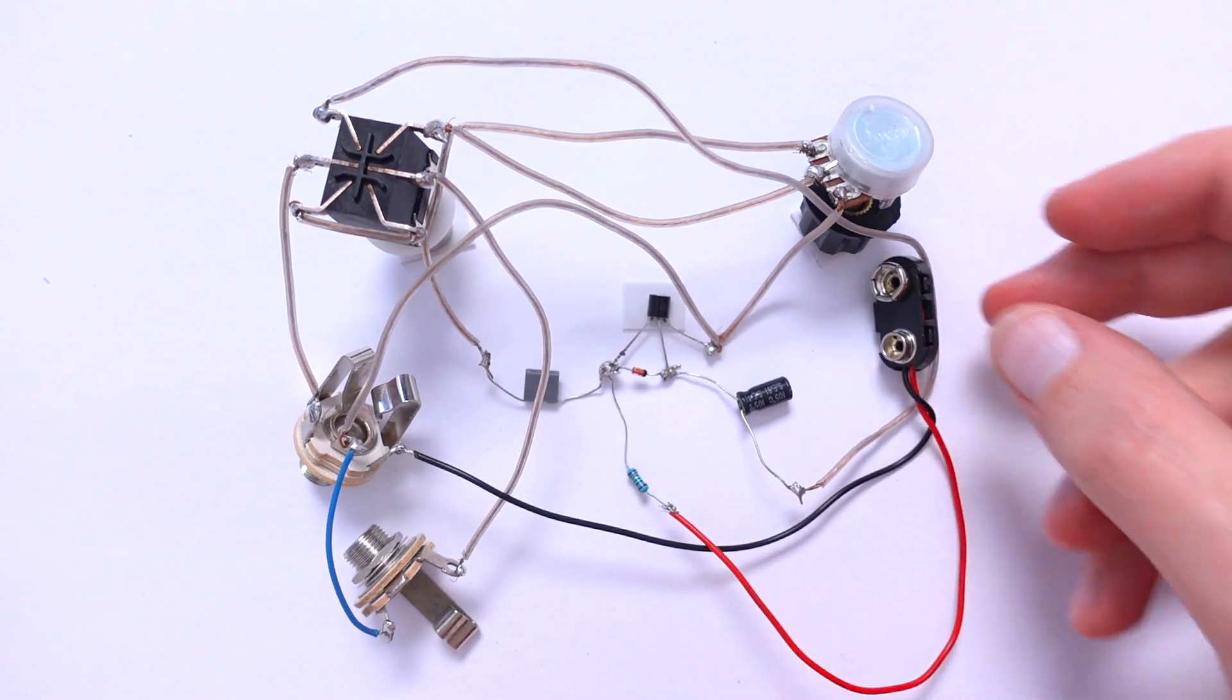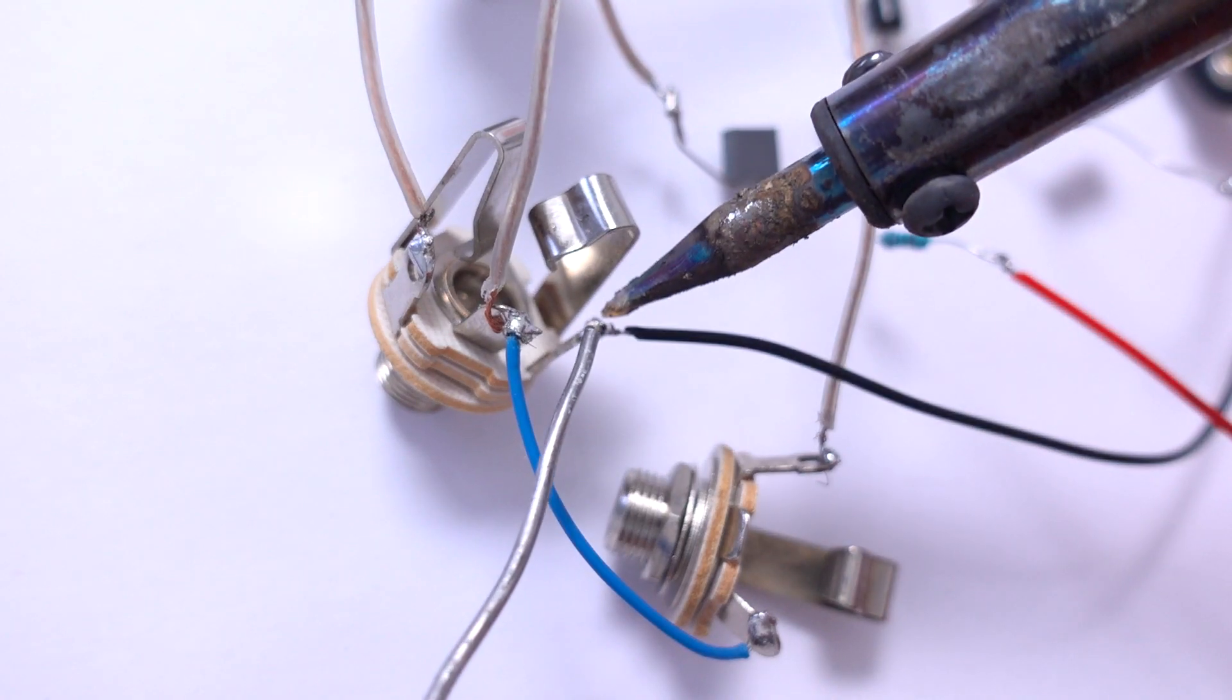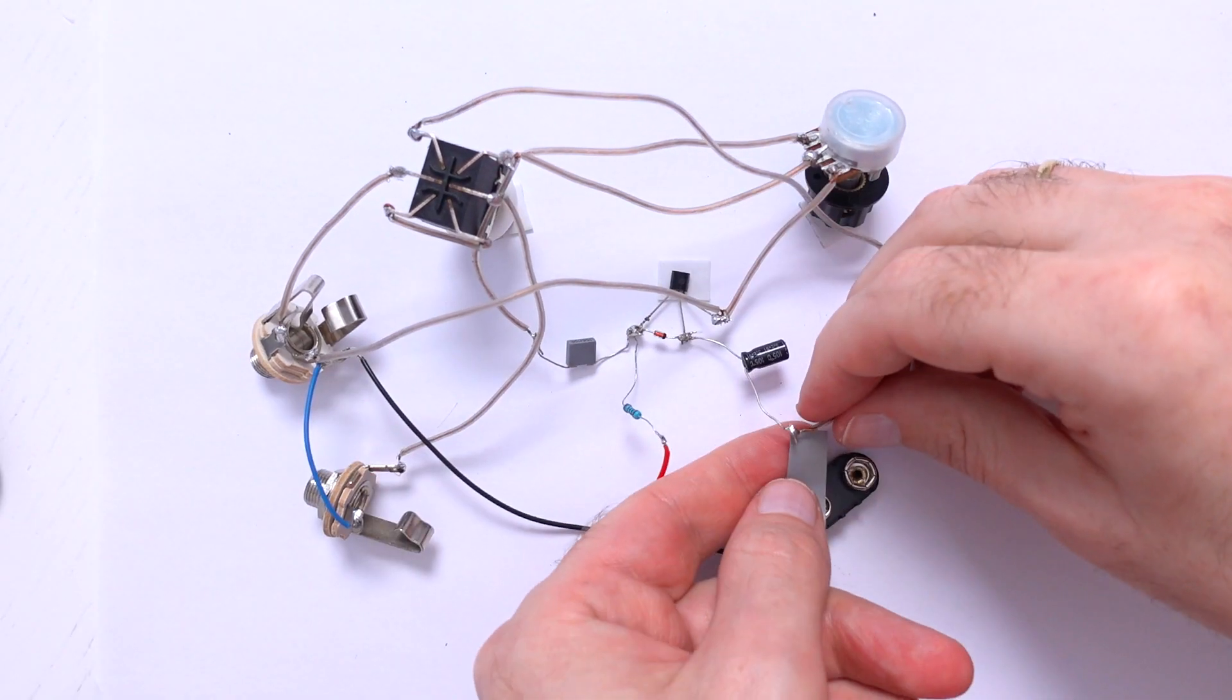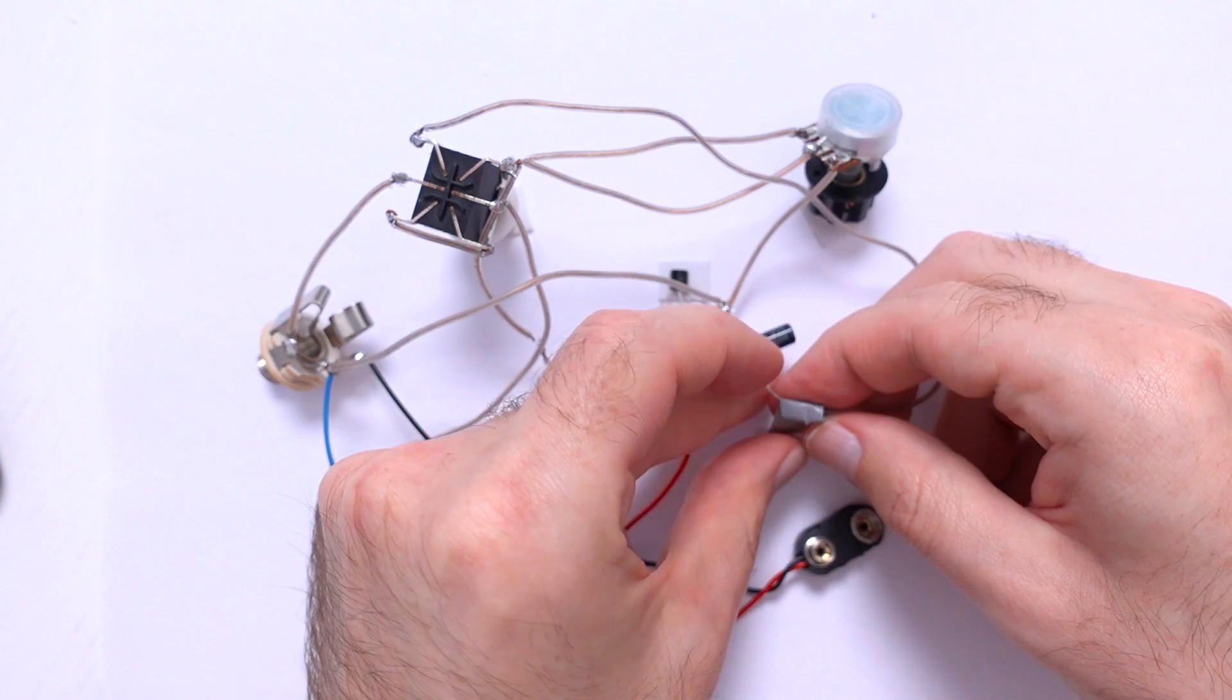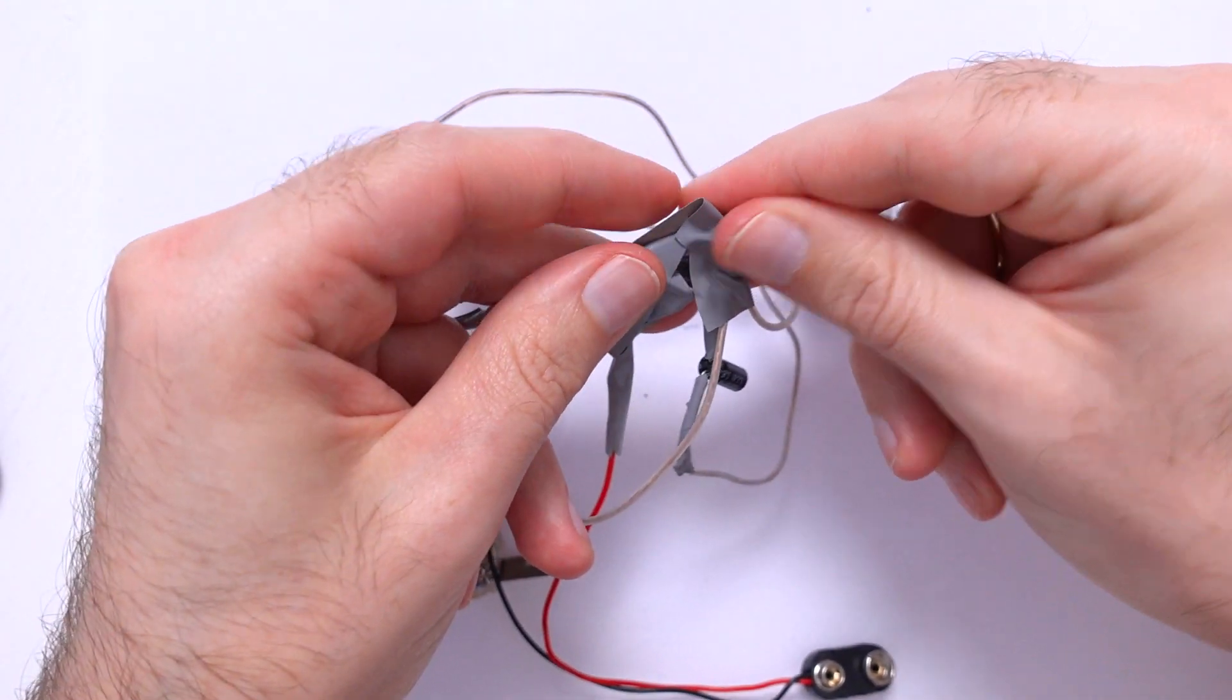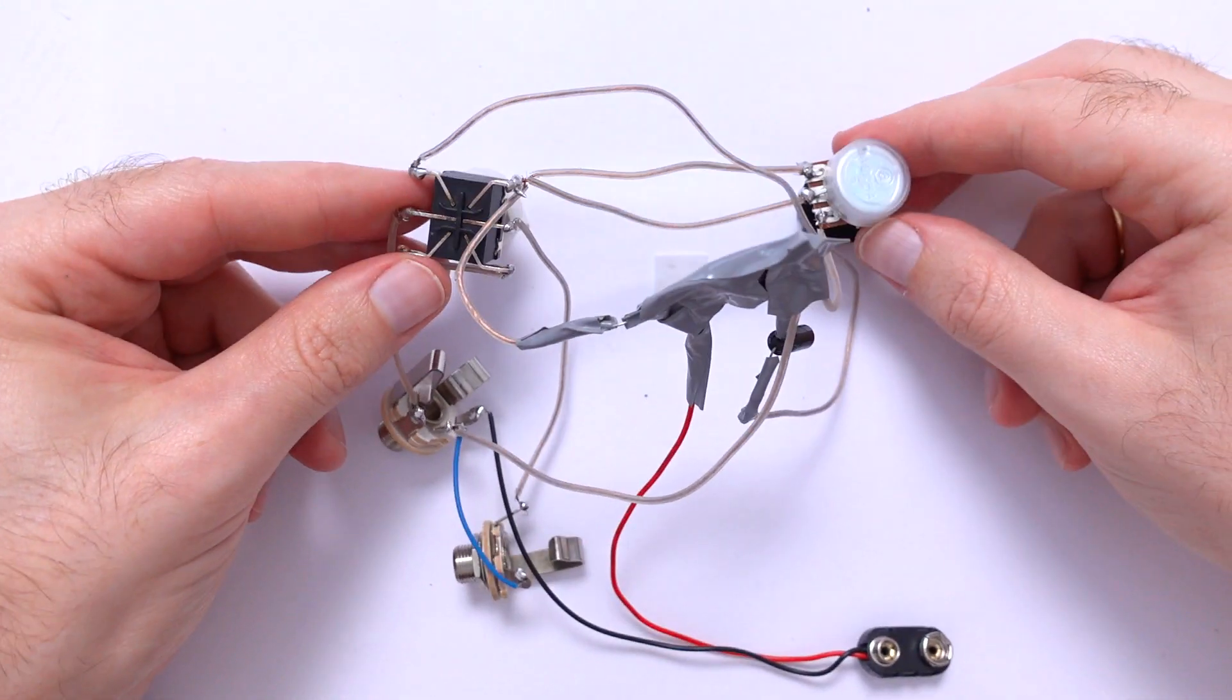Now we need to solder everything we haven't soldered yet and make an insulation with electrical tape. I wrap each joint separately and then wrap it all together. This will help to keep everything tight. And tada!